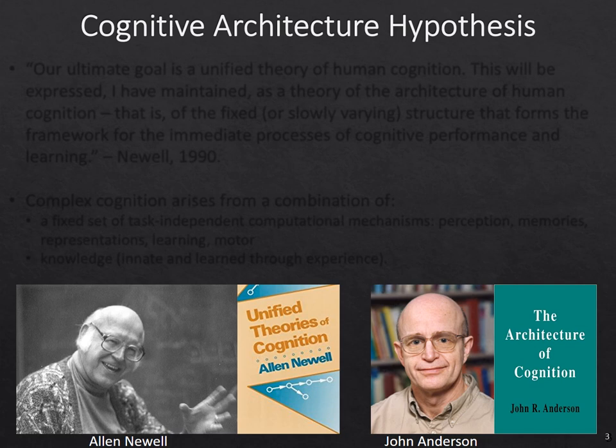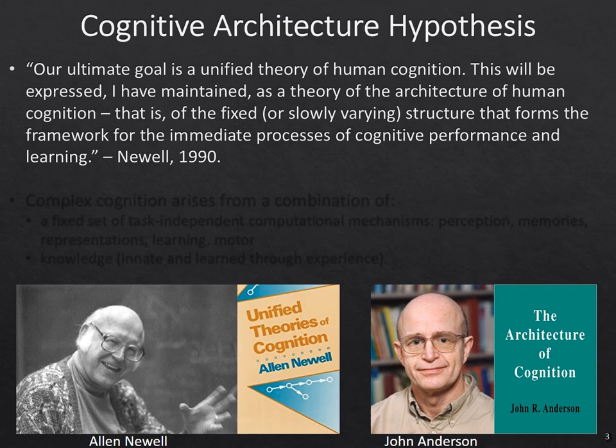Cognitive architecture has been around for many years. Two of the giants are Alan Newell and John Anderson. In 1990, in the book Unified Theories of Cognition, Alan Newell wrote: 'Our ultimate goal is a unified theory of cognition. This will be expressed as a theory of the architecture of human cognition — the fixed or slowly varying structure that forms the framework for the immediate processes of cognitive performance and learning.'